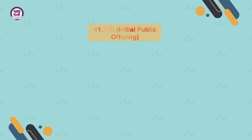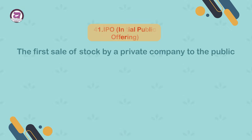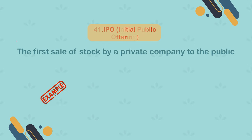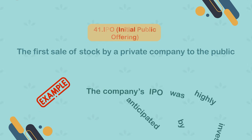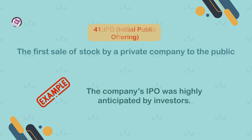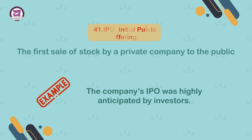41. IPO — Initial Public Offering. The first sale of stock by a private company to the public. Example: the company's IPO was highly anticipated by investors.